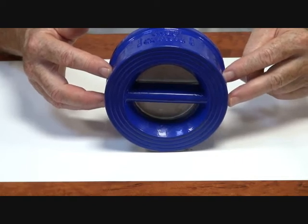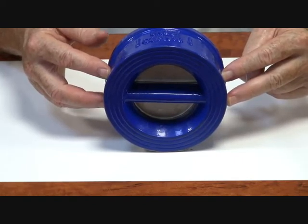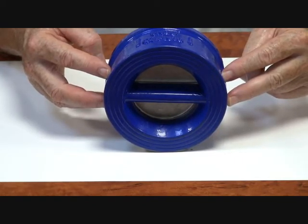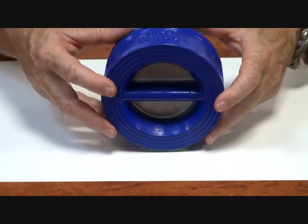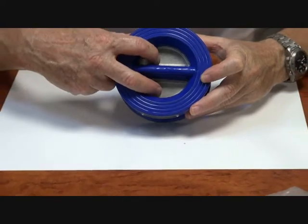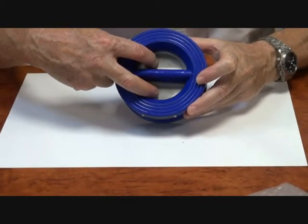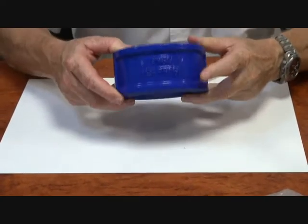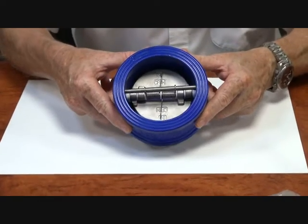This is a Series Duo Check wafer check valve. It's designed to be clamped between two flange faces. Rubber will go across here. The flaps inside the unit are cast iron with